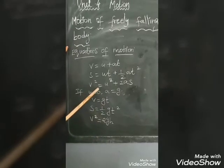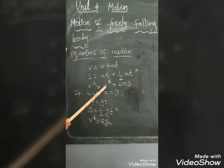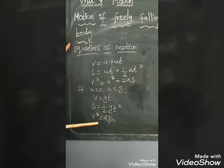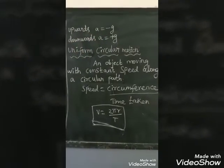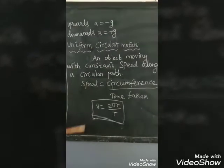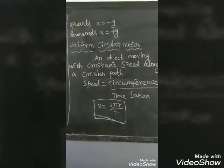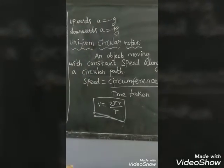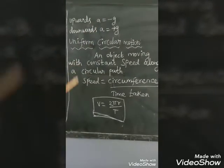For the third equation, V² = U² + 2AS. Here, U² = 0 and A = G, so V² = 2GH. For upward motion, A = −G, because the object is thrown vertically upward in opposition to acceleration due to gravity. For downward motion, A = +G. We substitute accordingly.